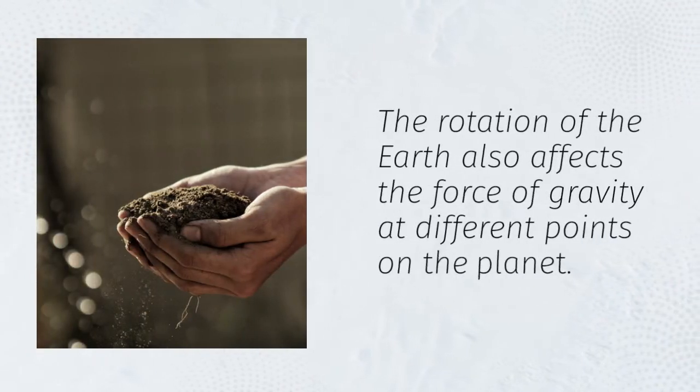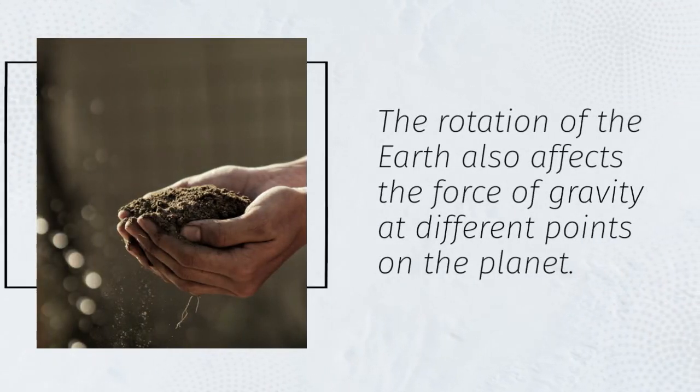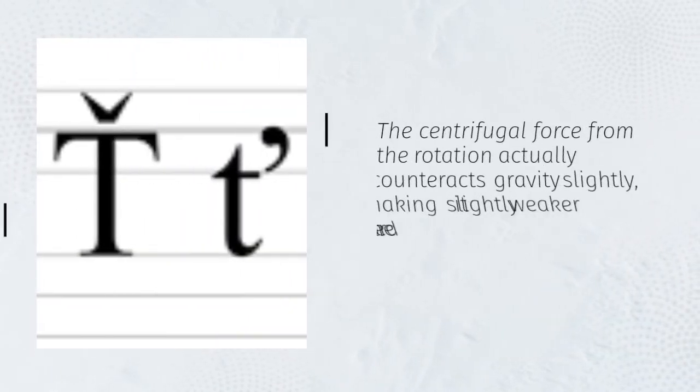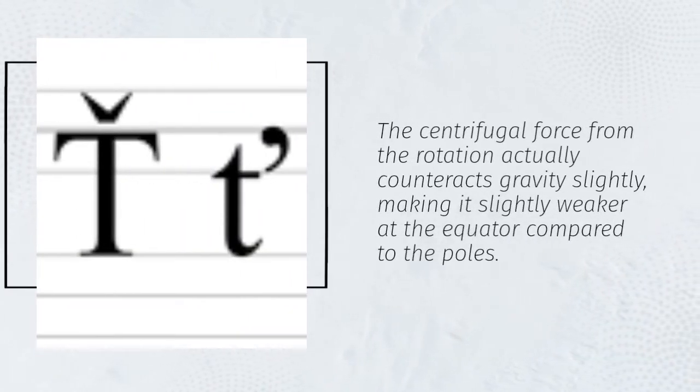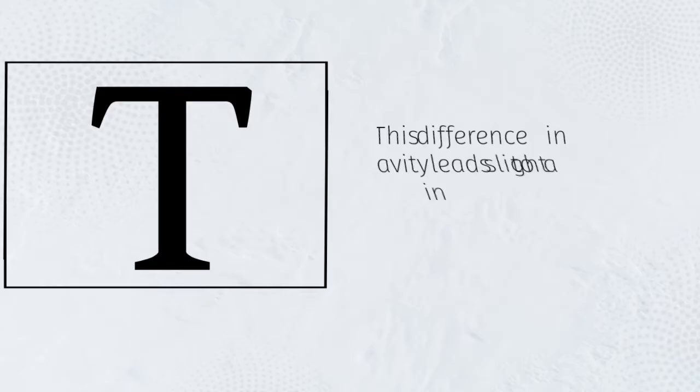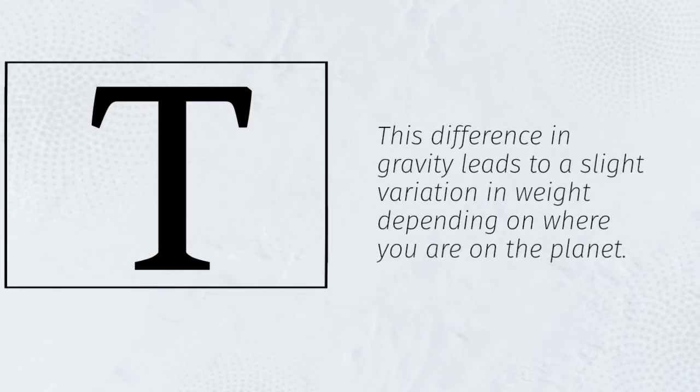The rotation of the Earth also affects the force of gravity at different points on the planet. The centrifugal force from the rotation actually counteracts gravity slightly, making it slightly weaker at the equator compared to the poles. This difference in gravity leads to a slight variation in weight depending on where you are on the planet.